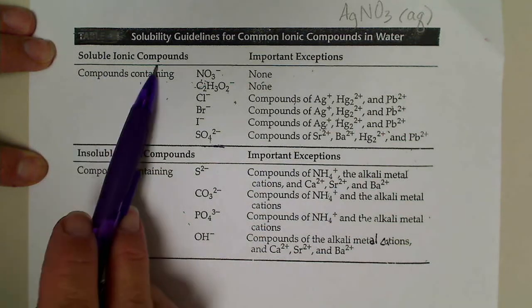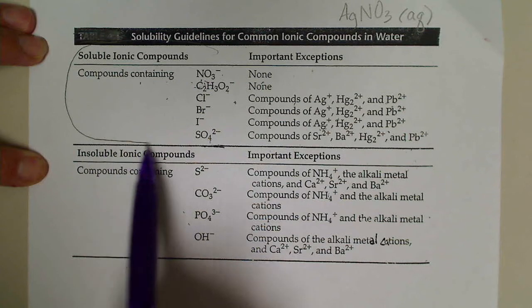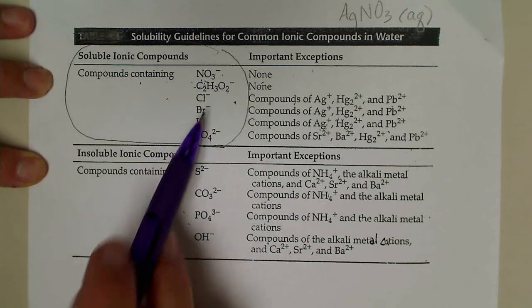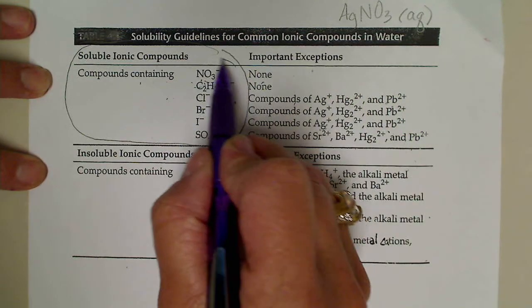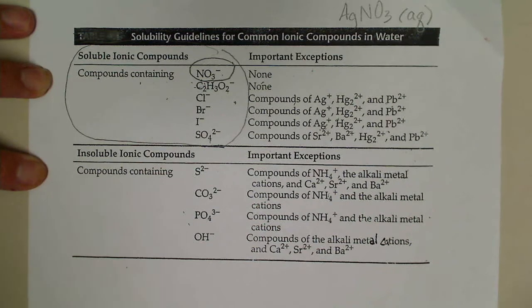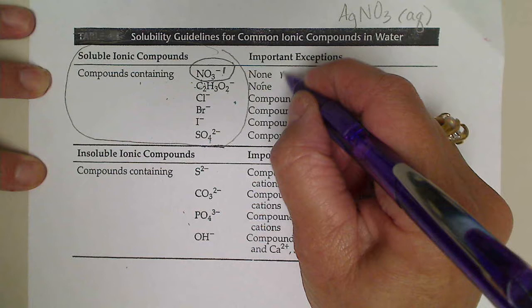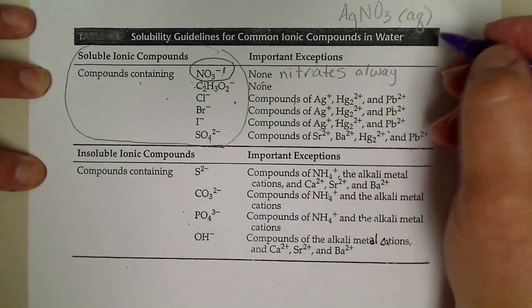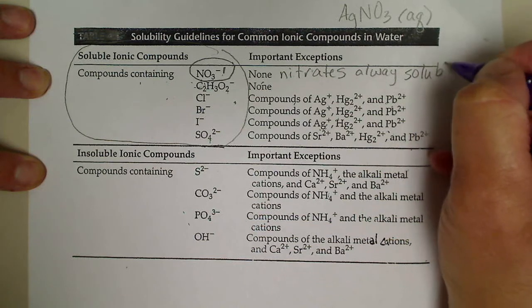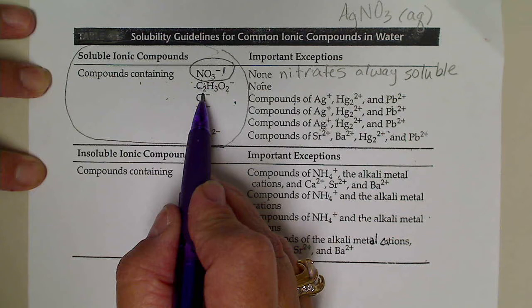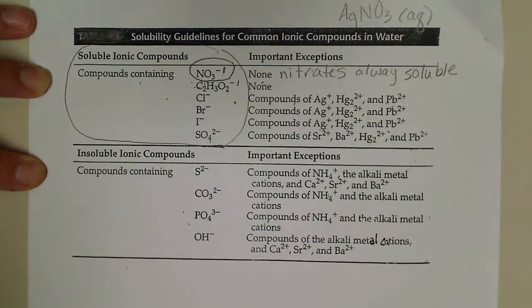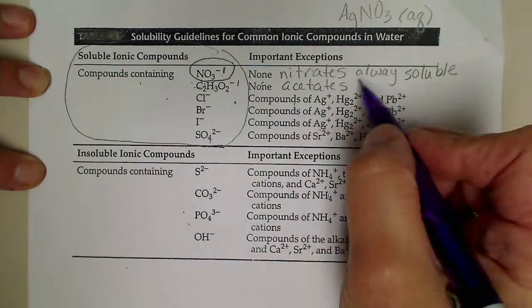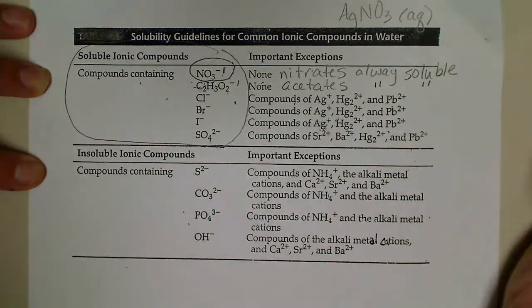If we look at this table, which is in most general chemistry books, soluble ionic compounds are over here. So if we have a metal that is combined with one of these nonmetals, then the compound will be soluble. One thing that is useful to learn is that nitrates - that's this polyatomic ion NO3 with a minus one charge - nitrates are always soluble. So if we want to put a metal in solution, if we buy the metal nitrate, that means we can always get it to dissolve. Acetate C2H3O2 with a minus one charge, acetates are also always soluble.